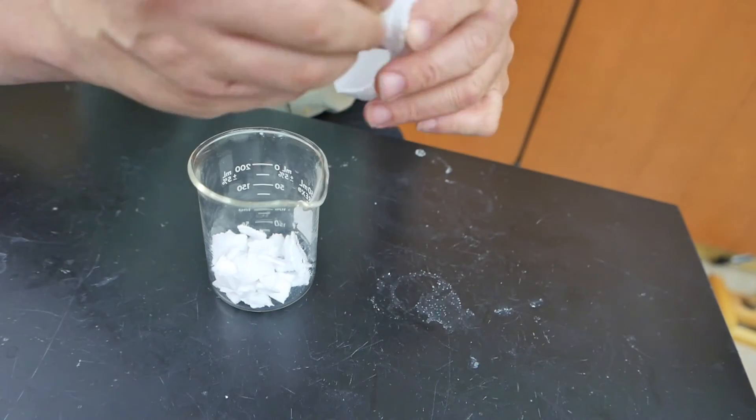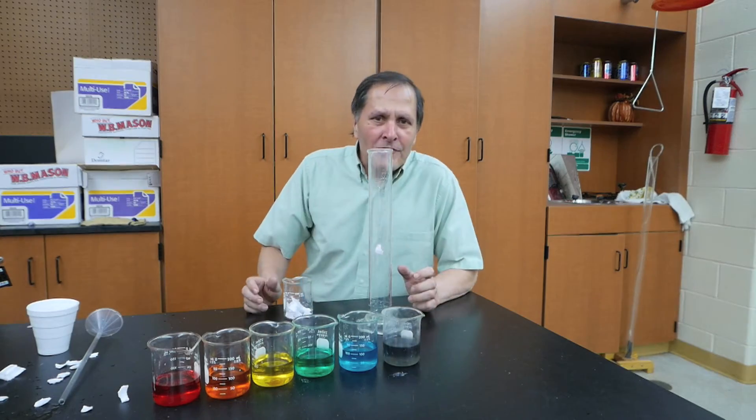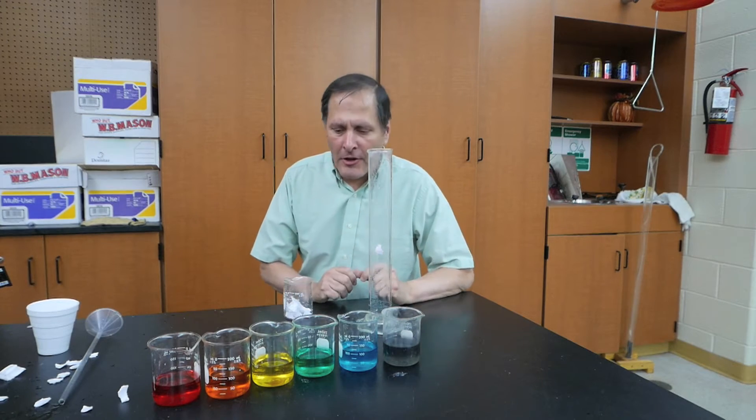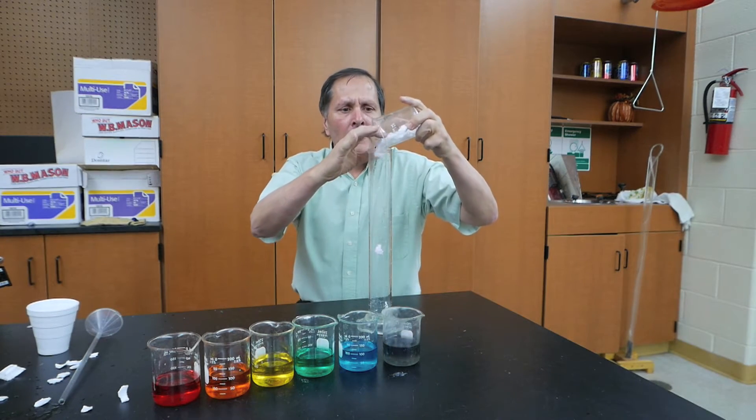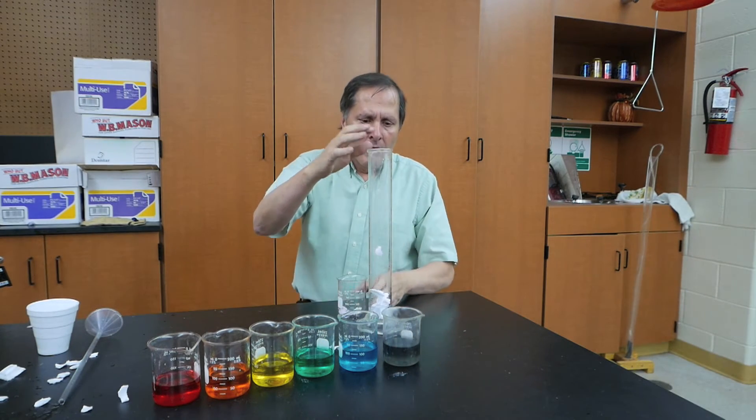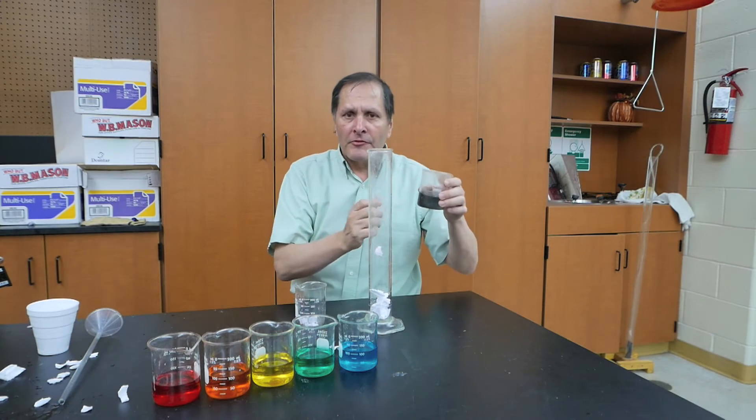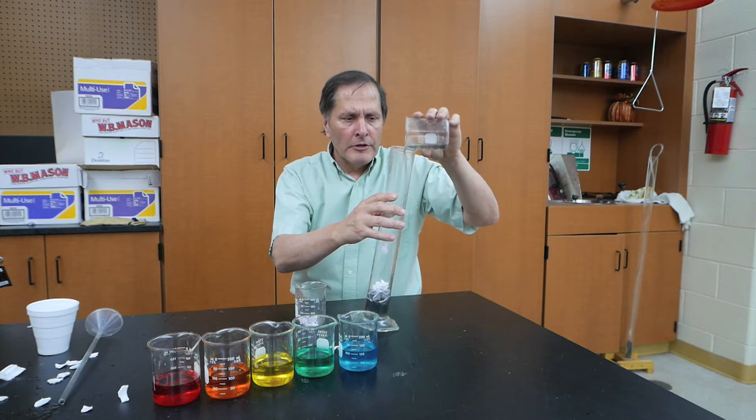I'll also need some small pieces of this foam cup. Now that we have our solutions mixed, it's ready to add them to the graduated cylinder. I'm going to start by putting some foam pieces in here. That's going to keep the layers from mixing as I'm adding one on top of the other. I'll add the purple first since that's the densest. And that one I can simply pour in.